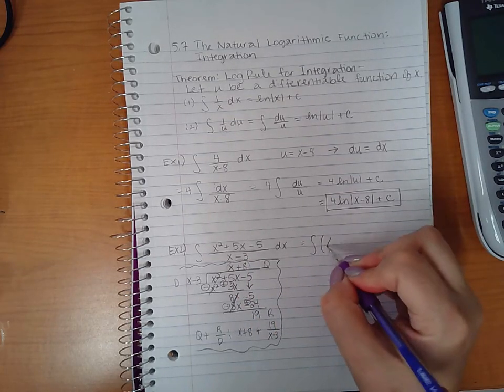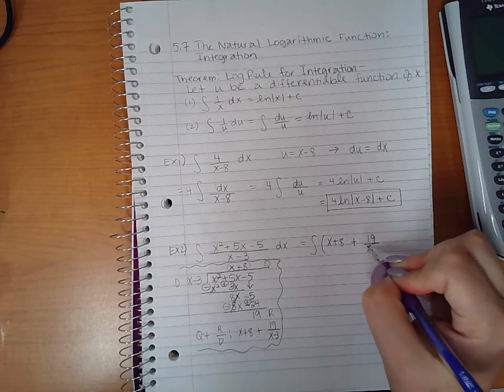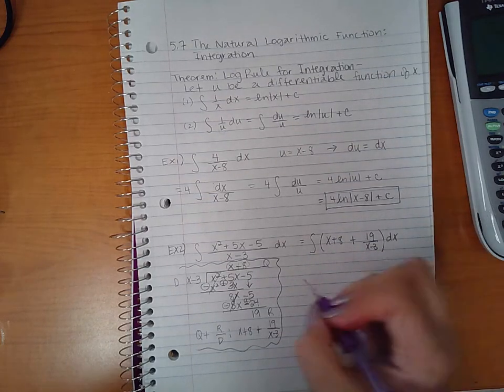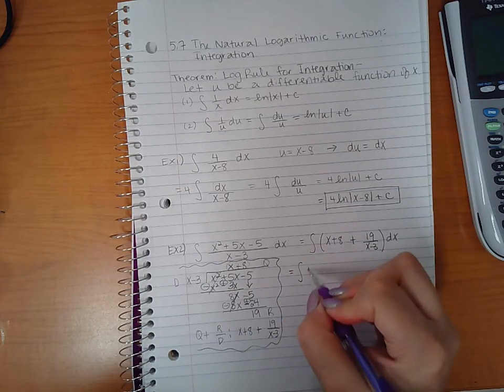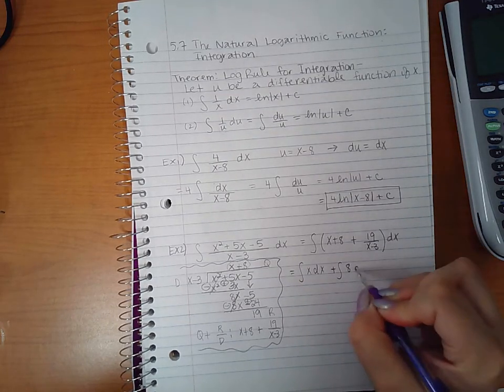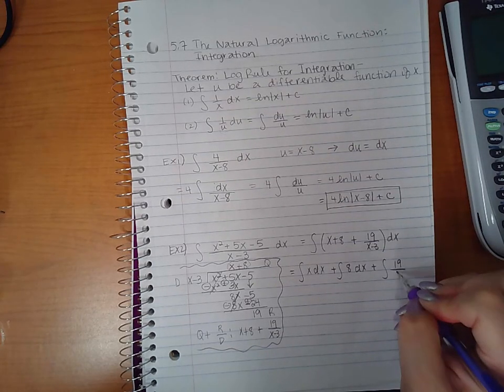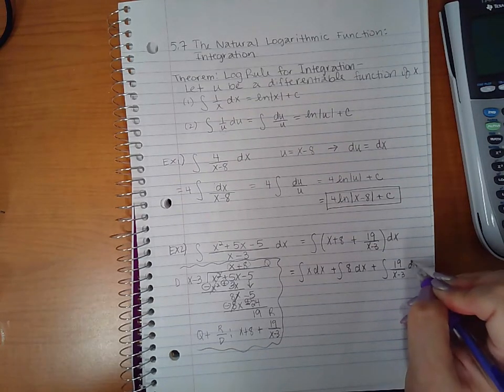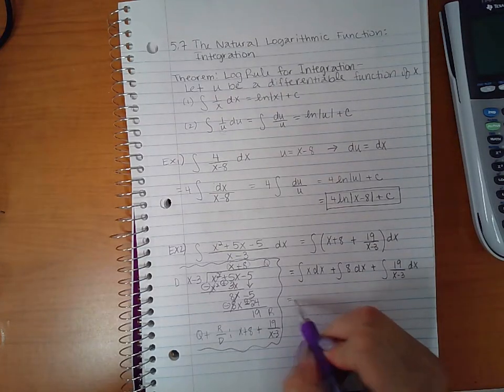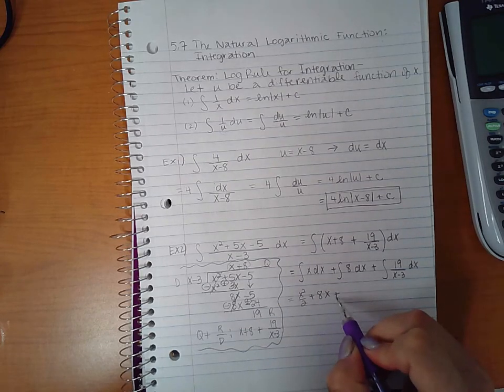So what we get is x plus 8 plus 19 over x minus 3. So this integral up here can be rewritten as x plus 8 plus 19 over x minus 3. And since there are three terms now, we can separate this integral into its three separate integrals.